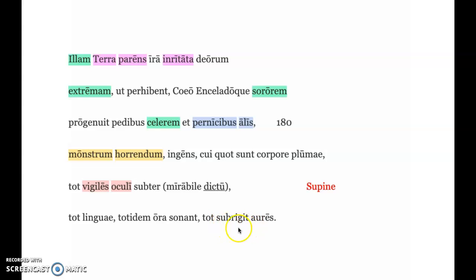So this last little section here from tot to aures is difficult because it switches the subject. We get subrigit, which is a singular verb, but aures is plural, so that can't be the subject. So you have to imply that the subject here is Rumor herself. So it says Rumor raises so many ears.